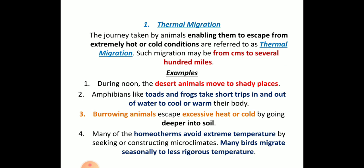Amphibians like toads and frogs take short trips inside and outside the water to cool and warm their body temperature. Burrowing animals escape from excessive heat or cold by going into deeper soil. Many homeotherms, like birds, migrate from one region to another to regulate their body temperature and also to help in reproduction.